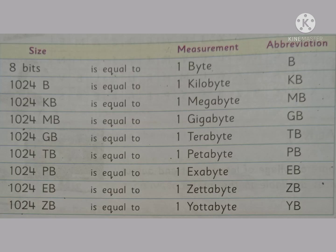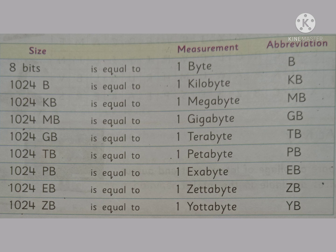In your textbook, you can see a size chart on page number 18. 8 bits is equal to one byte. Its abbreviation or short form is B. 1024 bytes is equal to 1 kilobyte, that is KB. Then, 1024 kilobytes is equal to 1 megabyte, that is MB.